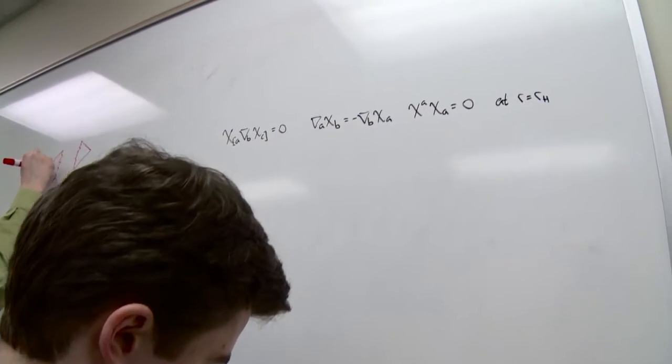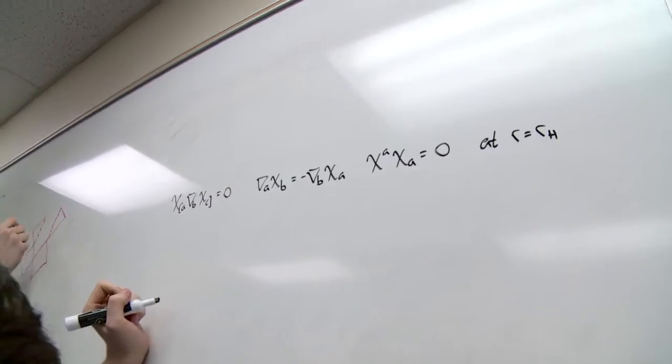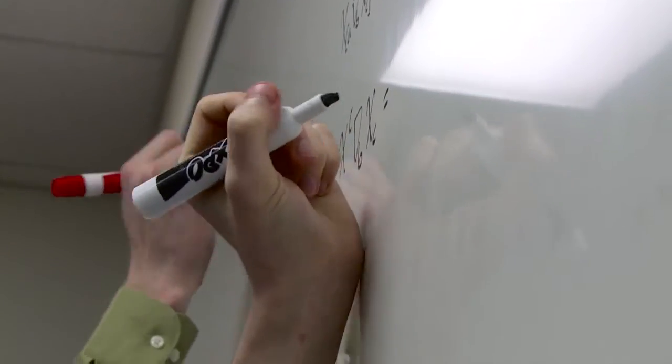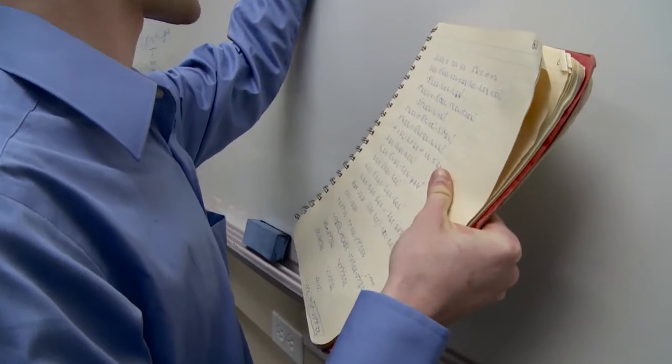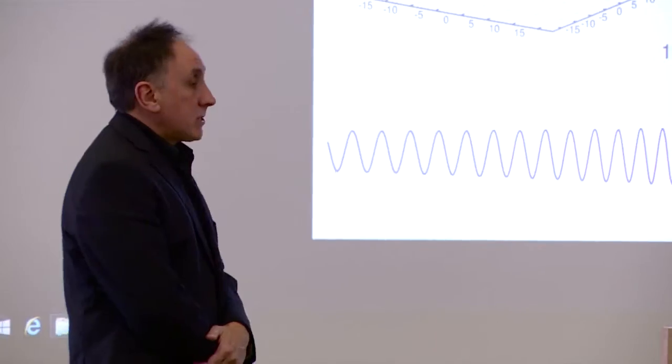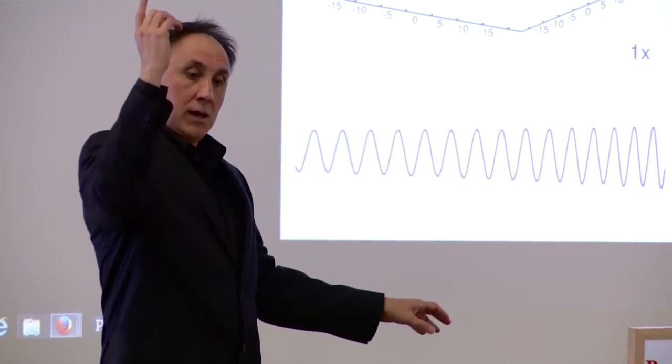I work with Carlos Lousto. We're interested in what happens when black holes are spinning very, very quickly. We think that in the universe these black holes will be spinning nearly as fast as they can. In order to find out what's going to happen at the end stage of their merger when they're orbiting very close to each other, we need to use full numerical relativity. This requires a lot of computational resources, which are available here at the CCRG.